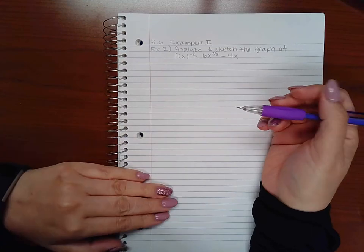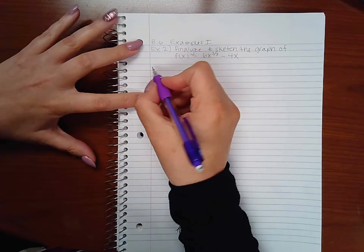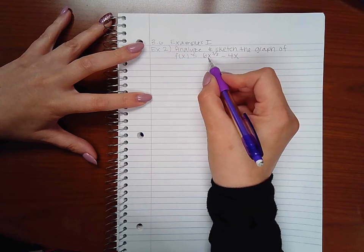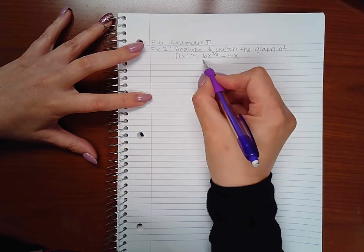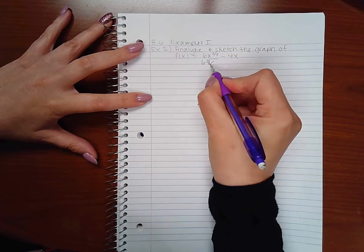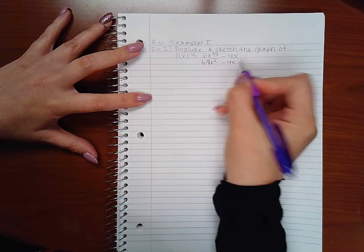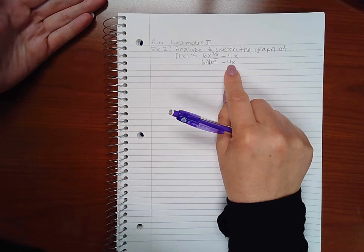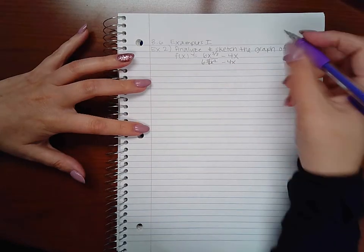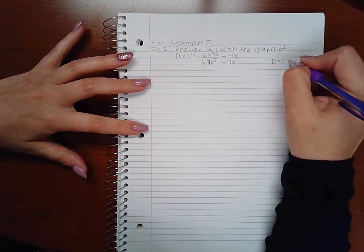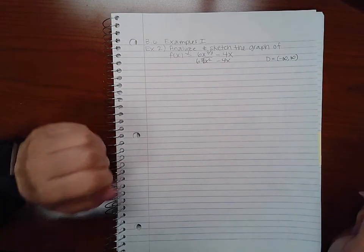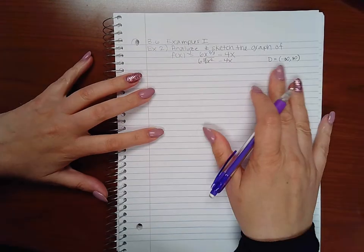So what we're going to do is follow those same directions as before. Step 1 is to find my domain. When you're talking about a cube root, because that's what this is, it's the cube root of x squared, the domain of a cube root is all real numbers, and the domain of a linear function is all real numbers. So my domain here is also going to be all real numbers. I don't have any restrictions on my domain.